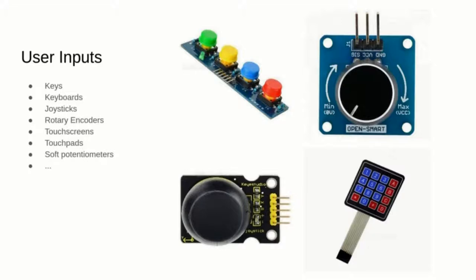Joysticks and touch screens take two analog signals for the X and Y axes that need to be read using some of the few analog I/O pins of the microcontroller, which has an internal analog-to-digital converter to digitalize the signals into bits. Rotary encoders, linear potentiometers, and soft potentiometers also use a single analog pin.